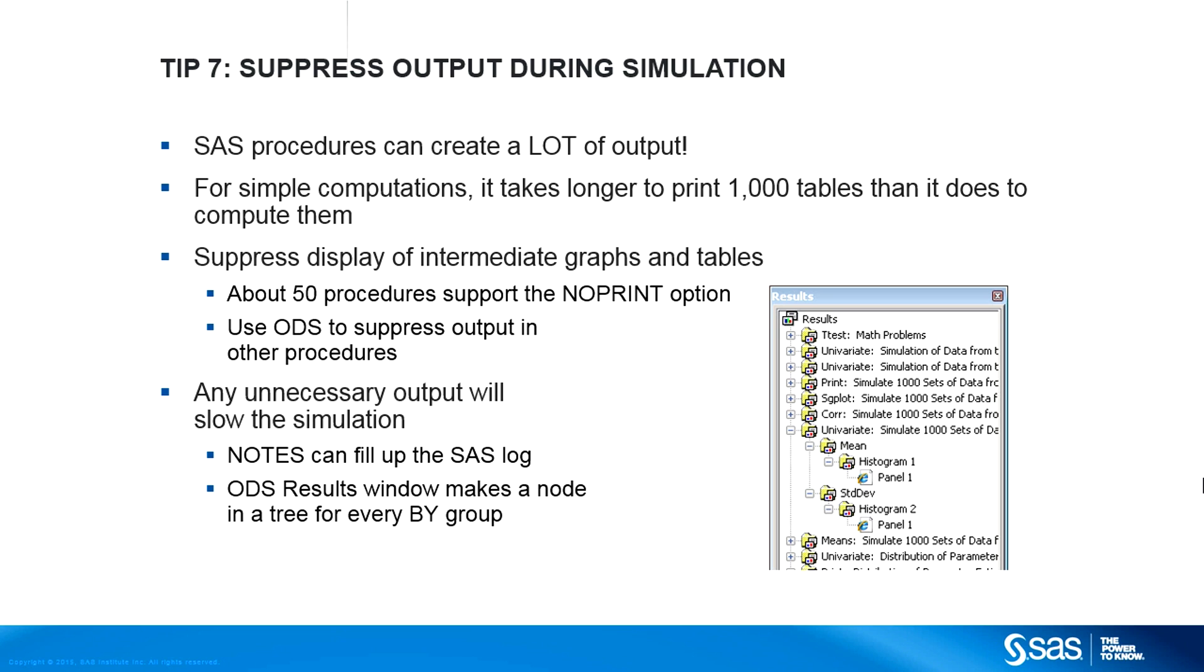Tip number seven: suppress output during simulation. You never want to print tables for thousands of by-groups. For a simple computation such as the mean of 10 observations, it takes longer to display the ODS table than it does to compute the statistic. Instead, use the NO PRINT option, or use ODS to suppress output. In a similar way, you might want to turn off the notes to the SAS log, and suppress the creation of nodes in the ODS results window, which is shown in the lower right.